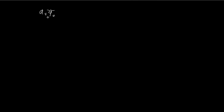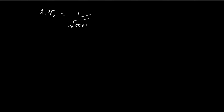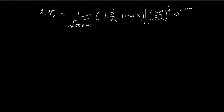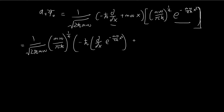To start off, let's apply the first operator first. We have these constants out here — this is the a+ operator — and we apply it to ψ₀, which is equal to (mω/πℏ)^(1/4) times e to the power of −mω/(2ℏ) x². So we have two factorial, a+ squared, ψ₀.